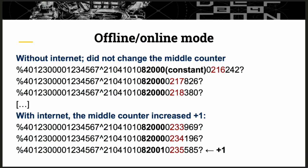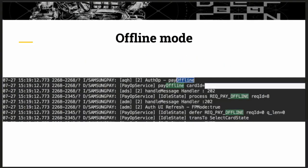In offline and online mode: when you are in offline mode, the counter in the middle of the token doesn't change. But when Samsung Pay connects to the internet, this counter increases every three or four transactions. One of the problems with Samsung Pay is that you can make payments in airplane mode. This means that Samsung Pay doesn't have full control of the tokens.